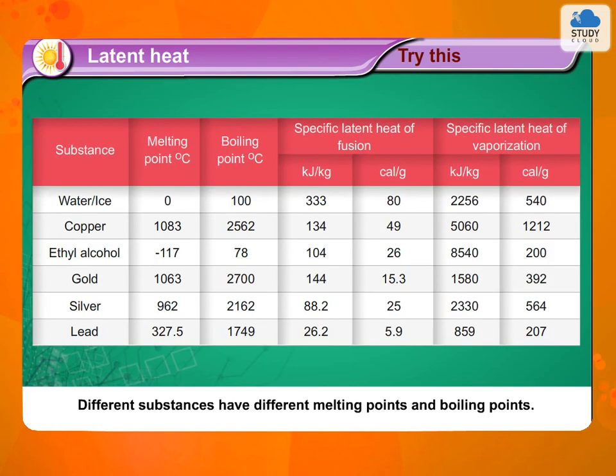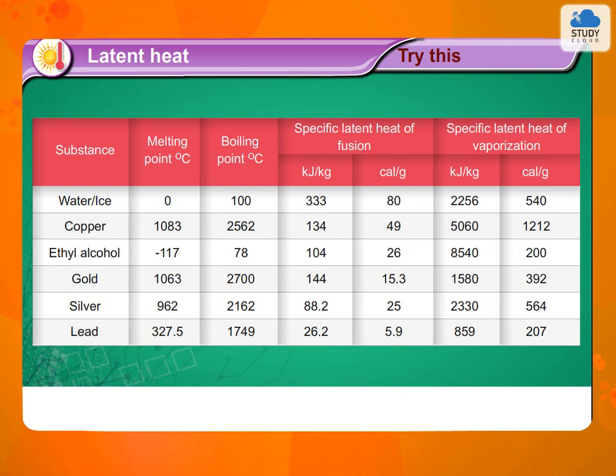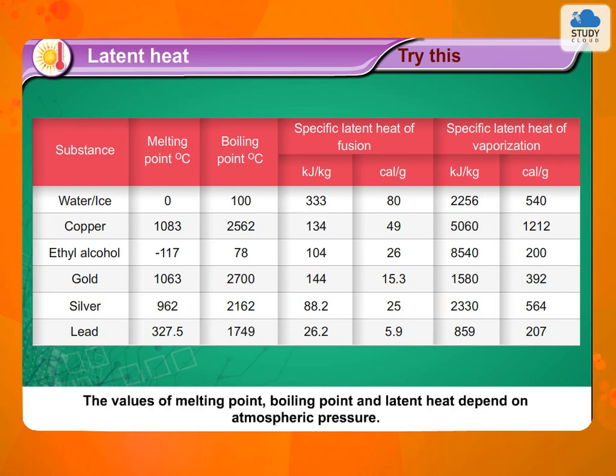Different substances have different melting points and boiling points. The values of melting point, boiling point, and latent heat depend on atmospheric pressure.